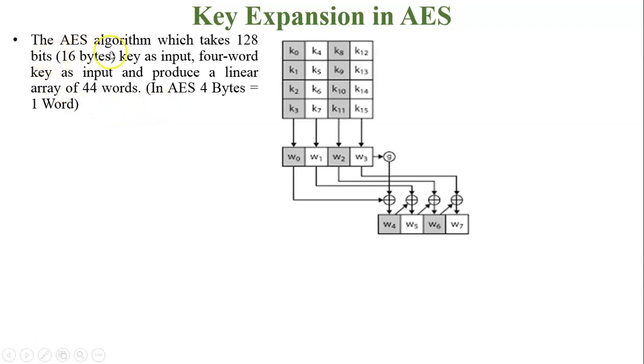So the AES algorithm takes 128 bits, or we can say 16 bytes, as key input. This is one matrix of the key. You can see there are 16 boxes, or we can say it is a 4 by 4 matrix. So 1 box is equal to 1 byte. We can say k0 equals 1 byte, k1 equals 1 byte, and so on. So this is a 128 bit array or 128 bit matrix.